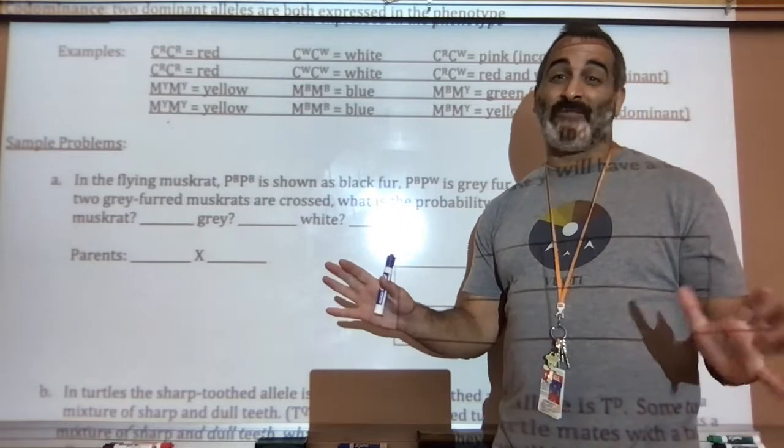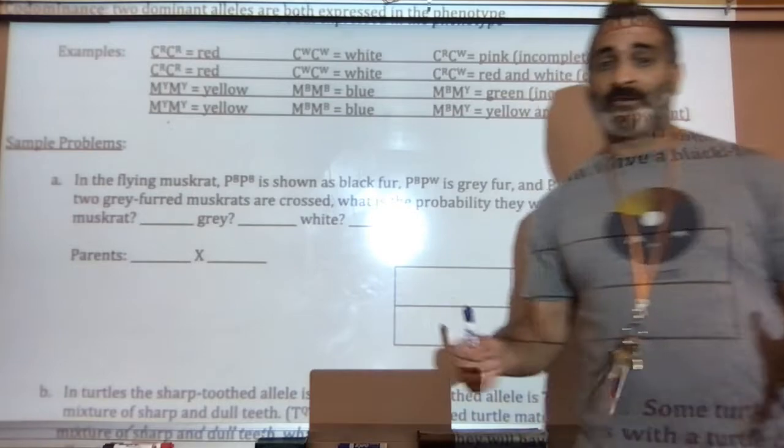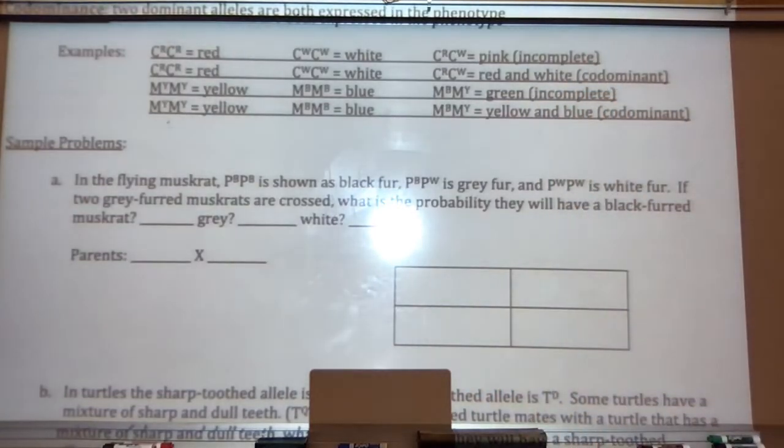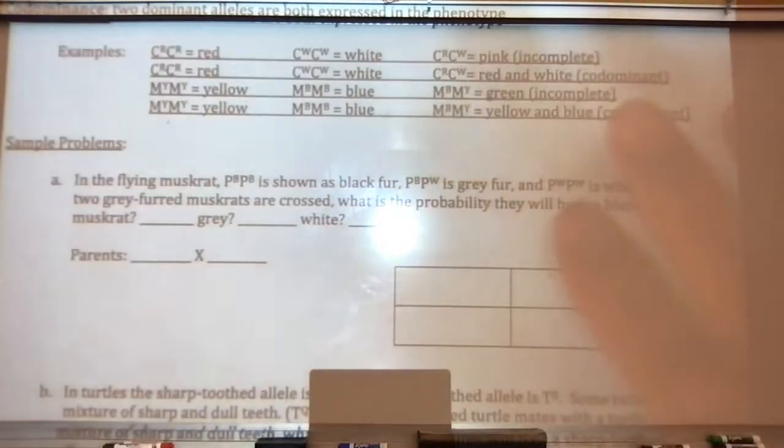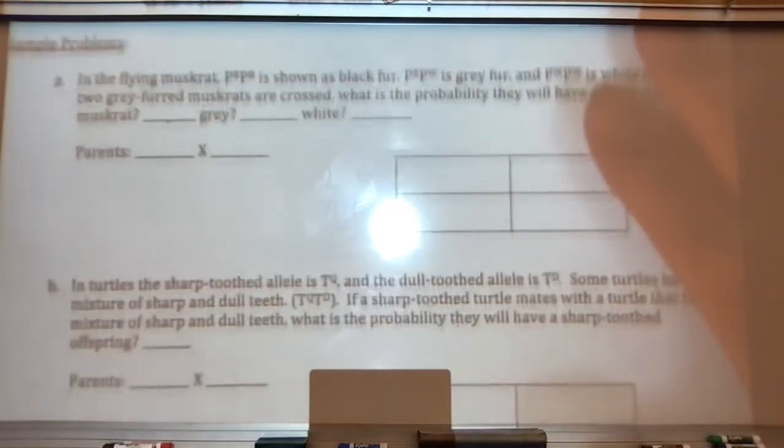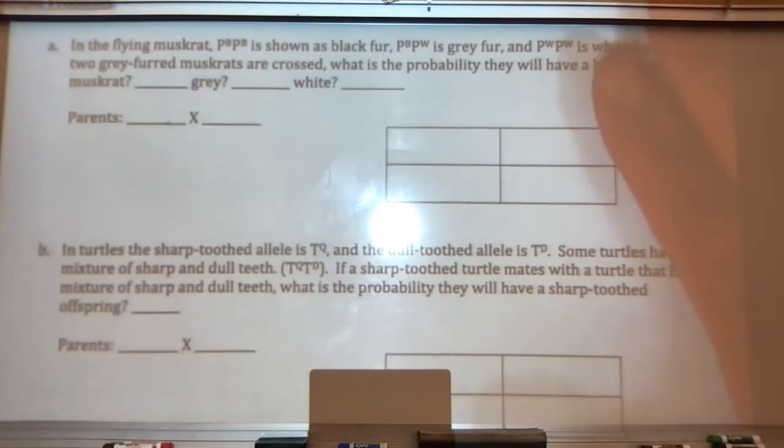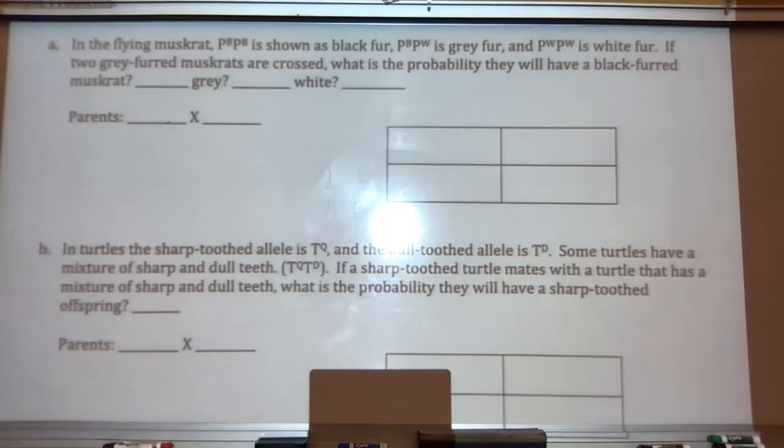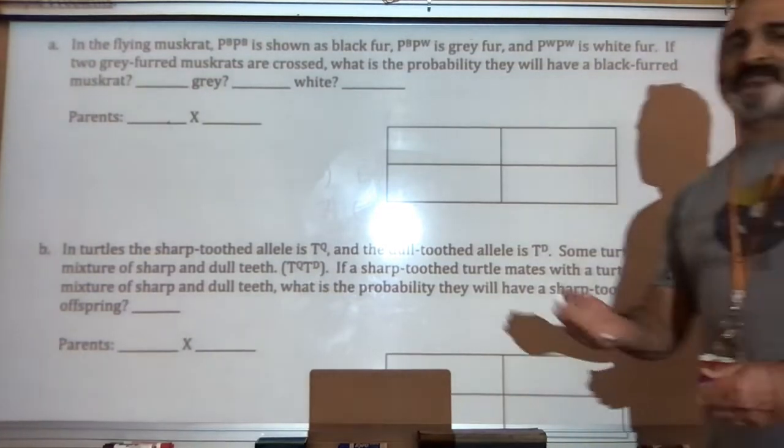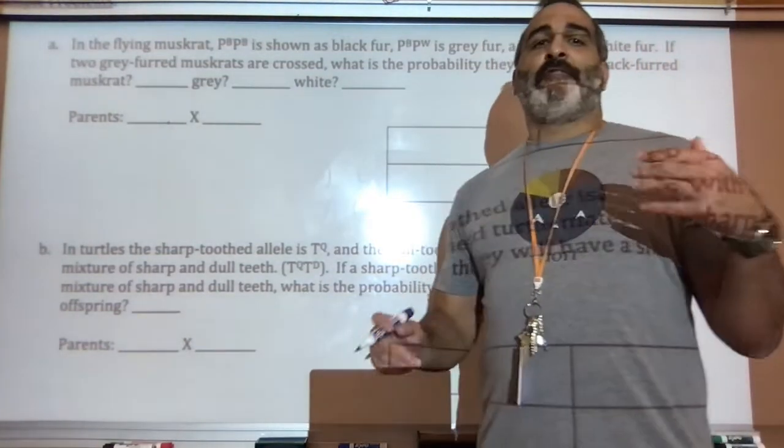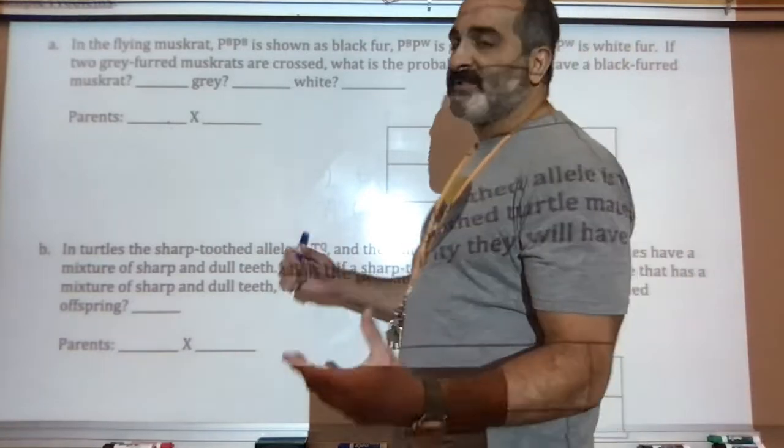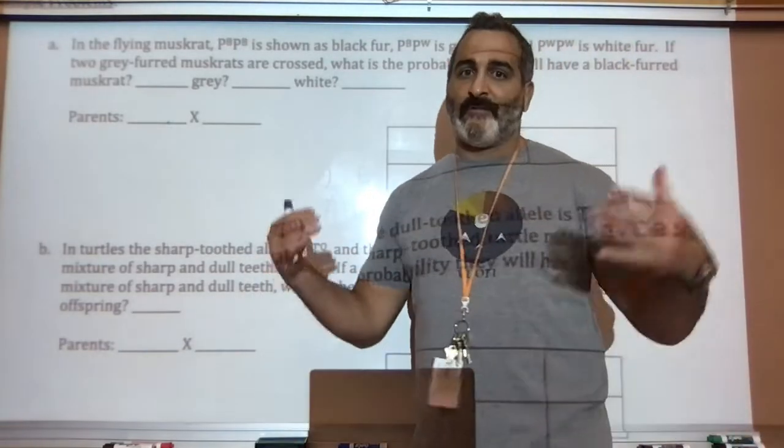So let's do some problems. Students generally find these ones simpler to do. So let's do the first one together. I'll slide it up so you can see. And the flying muskrat, it's hard to see, but you should have this printed in front of you. In the flying muskrat, there's an uppercase B and an uppercase B. It's hard to see, but those are uppercase B's is black fur.